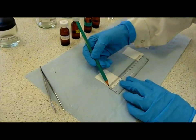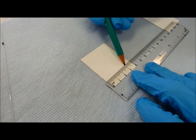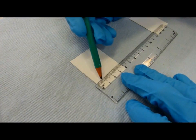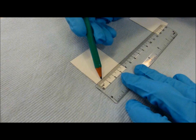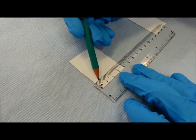Using a soft pencil, gently draw a baseline 1cm from the bottom of the plate. Do not scratch or damage the silica surface. Do not lay the ruler on top of the main area of the plate.